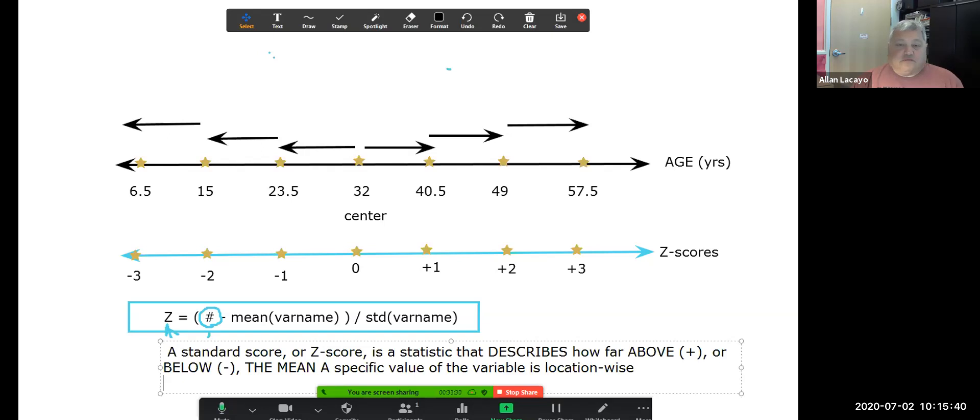For example, if I look at a 40-and-a-half-year-old, how old is a 40-and-a-half-year-old in terms of this data set? Well, a 40-and-a-half-year-old is roughly one deviation from the center above average. So a 40-year-old is one deviation above the mean, thus its z-score value would be one, plus one.